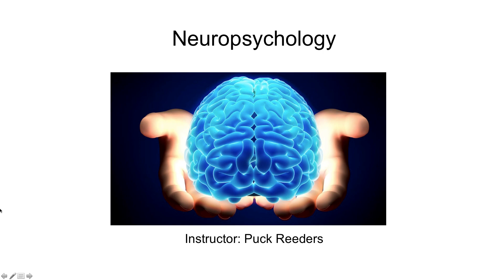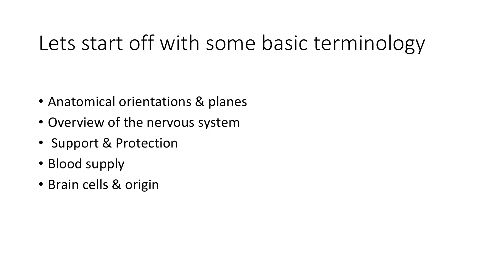Hi everyone and welcome to Neuropsychology. My name is Puck Readers and I will be your instructor for this course. This is your first video and first lecture, and we will start off with chapter three of the book Fundamentals of Human Neuropsychology. In this chapter we're going to cover a broad variety of things. In this video we'll talk about some terms and anatomical orientations and planes, and then in future videos we will talk about the overview of the nervous system and how it's organized.